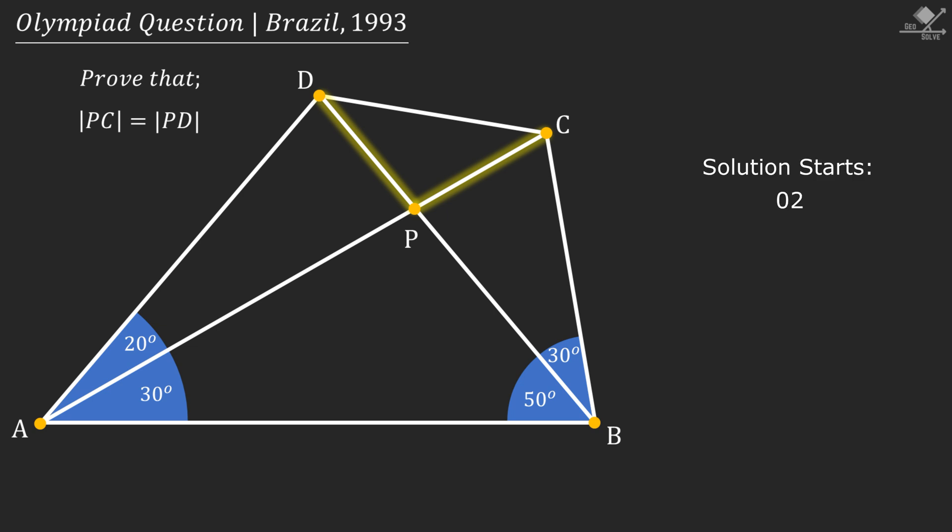First, let's find some missing angles that we will use. Using this shaded triangle, angle ADB can be calculated as 80 degrees. And from this triangle, angle ACB will be 70 degrees.